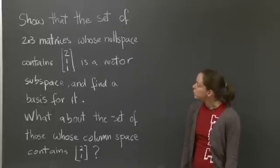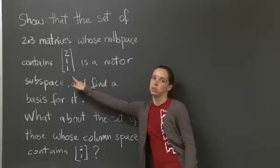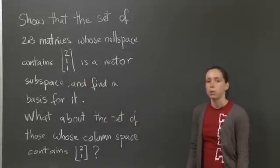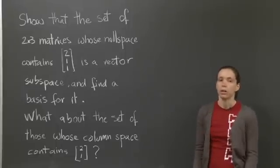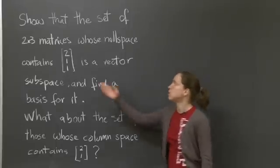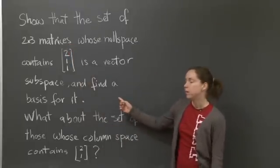We have a set of 2 by 3 matrices whose null space contains the vector 2, 1, 1. And I want you to show that this set is actually a vector space, well, a vector subspace of the space of all 2 by 3 matrices. And then I want you to find a basis for it.